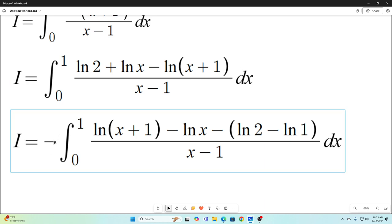We have negative natural log x plus 1, which is right there, negative negative natural log x which is plus natural log x, minus minus natural log 2 which is plus natural log 2, and then minus minus minus natural log 1 which is minus 0. So nothing changed. And the reason I did that will become clear in the next step.